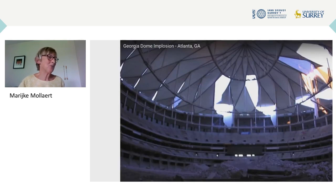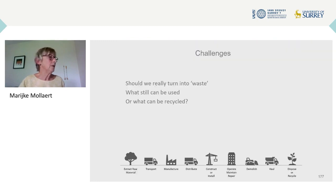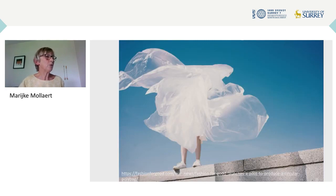When I started my career some time ago, the Georgia Dome was considered a masterpiece of engineering. I had never thought that one day, with a scheduled implosion, the whole roof should collapse to get rid of the building. Should we really turn into waste what still can be used or what can be recycled? We should take responsibility for the coming generations — recycle what is recyclable. And even if zero waste is probably not reachable soon, can we, from now on, encourage cradle-to-cradle and especially promote valuable plastic to valuable plastic? Thank you.